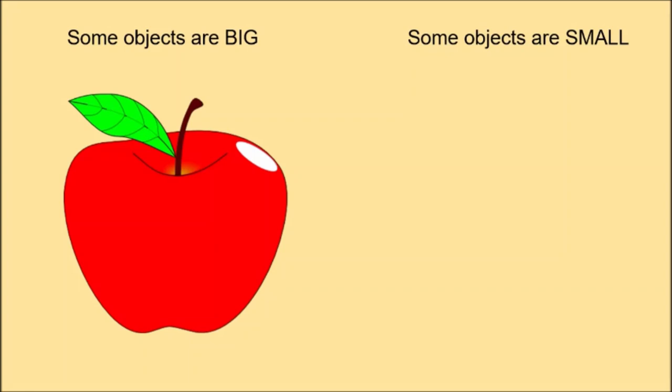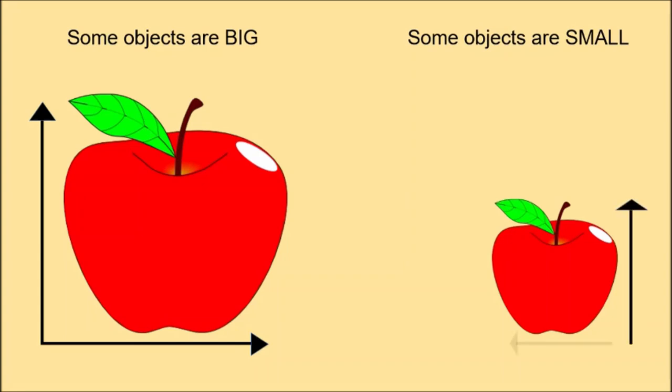Some objects are big and some objects are small. You can see the difference between these two apples. One apple is big and one apple is small.